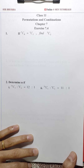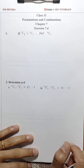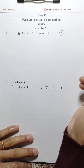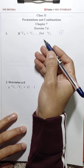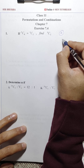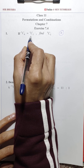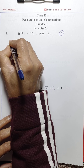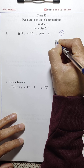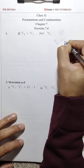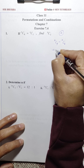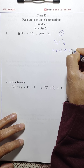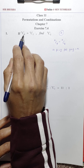Question number 1: nC8 = nC2, find the value of nC2. To find nC2 we need the value of n. If you remember, we had a theorem: if nCP = nCQ, then either P = Q, or P + Q = N.